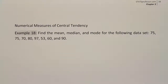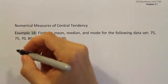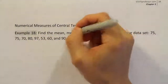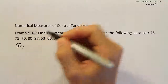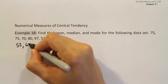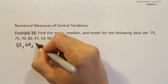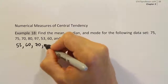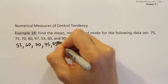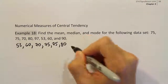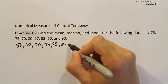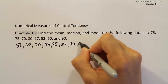What I want to do first, just because it's good practice, is to take these numbers and put them in order. Right now they're not in numerical order, and it's probably best if we put them in order for things like the median. So: 53, then 60 is the next number, then there's a 70, then it looks like there's a couple of 75's, then an 80, a 90, and a 97.